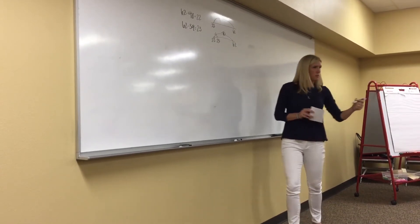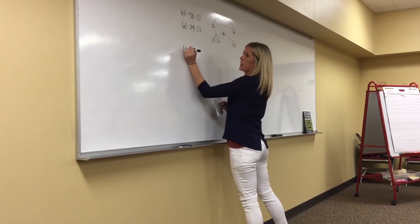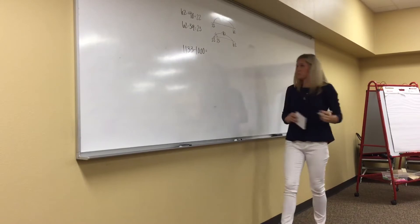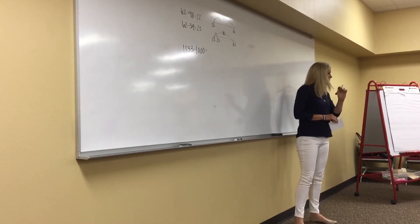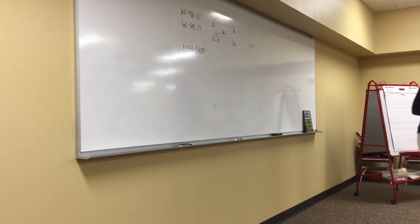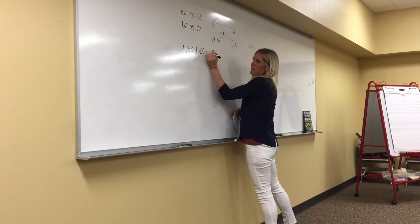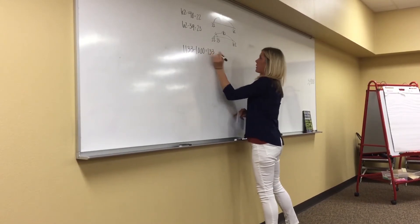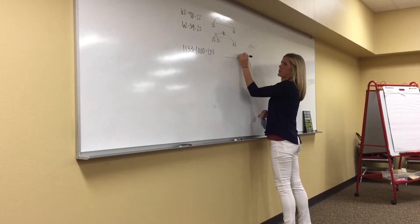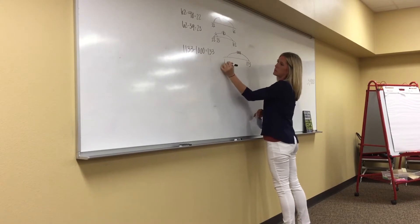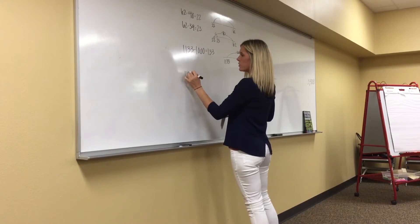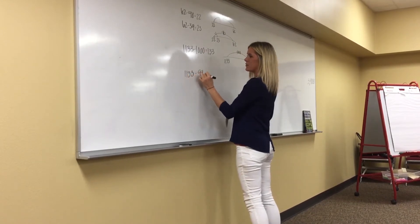What about this one: 1133 minus a thousand? Super simple — you're just trying to cause an answer. 1133 minus a thousand, which we all know is 133. Okay, I'm going to sketch just a picture of that. 1133 minus a thousand is 133. Now let me ask you: what is 1133 minus 995?